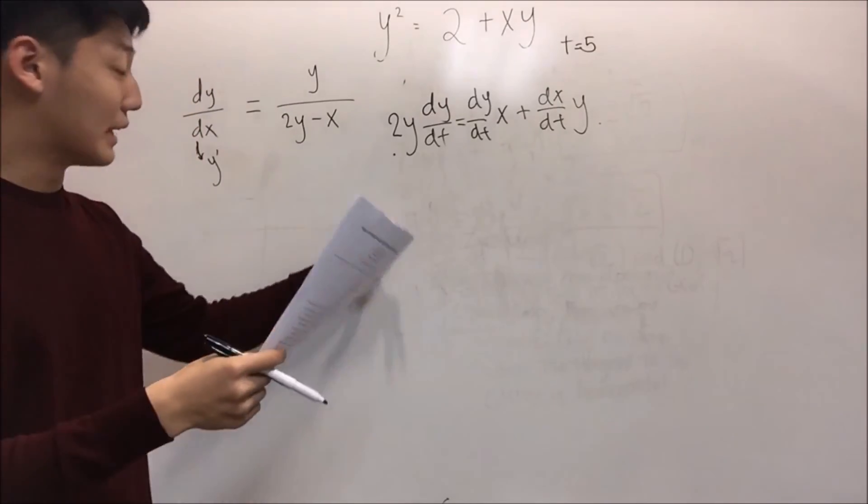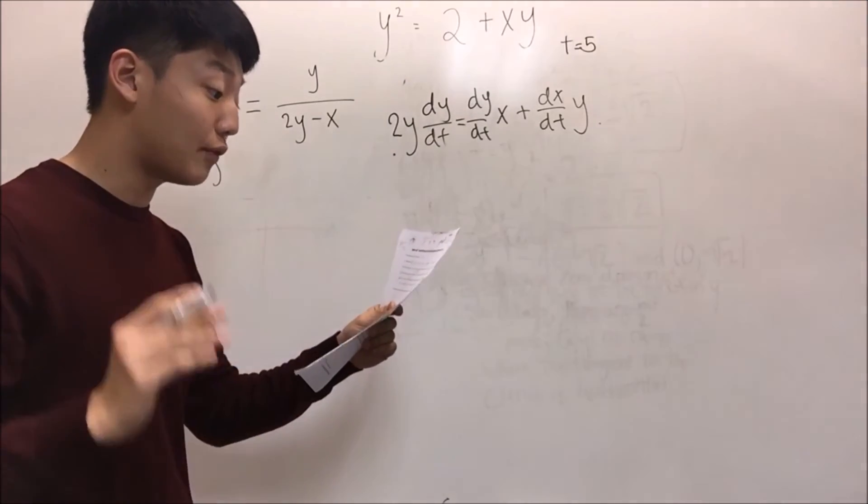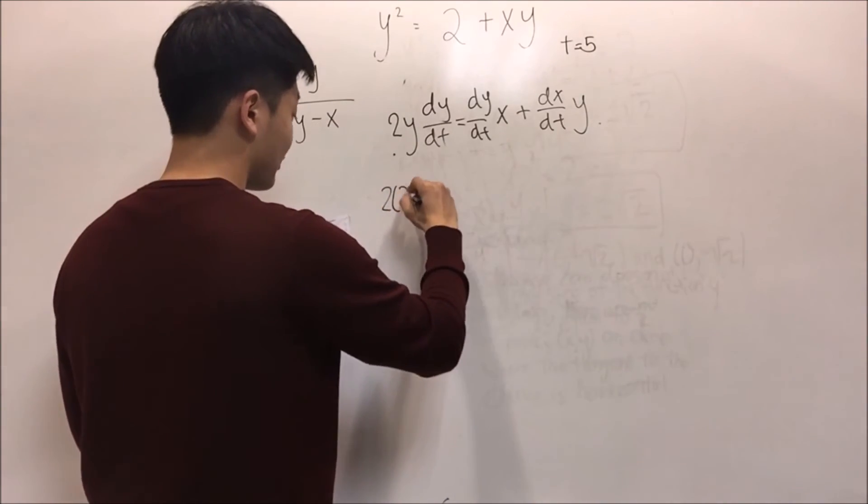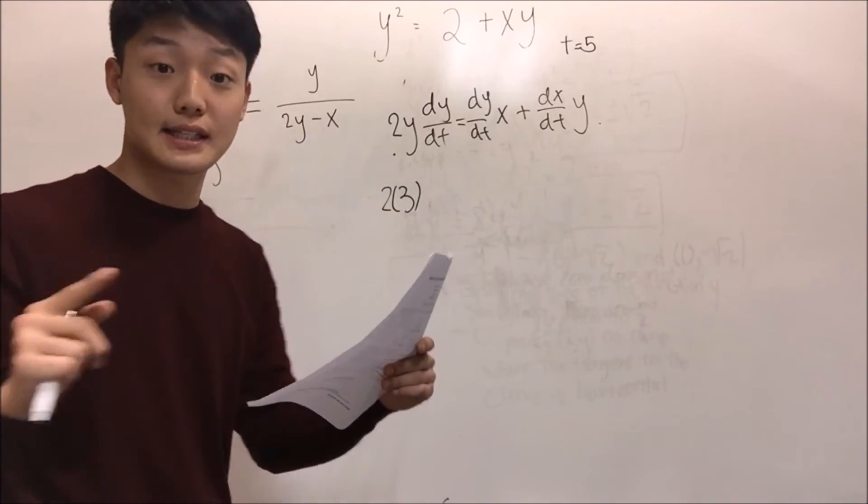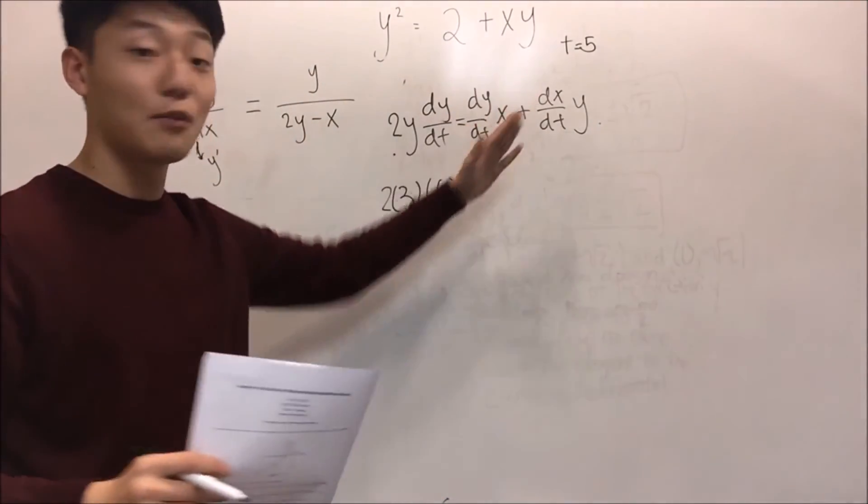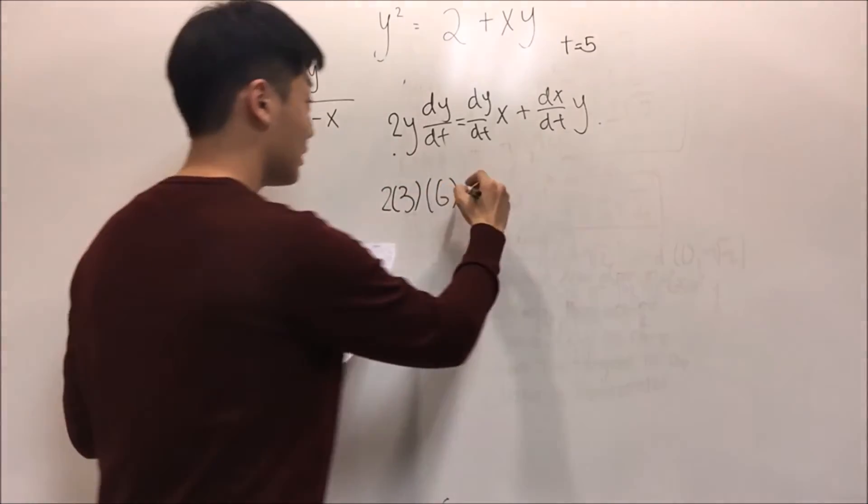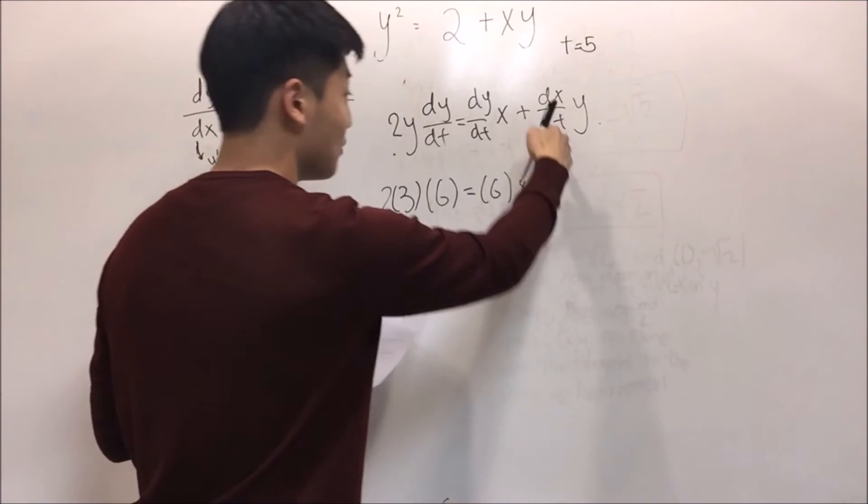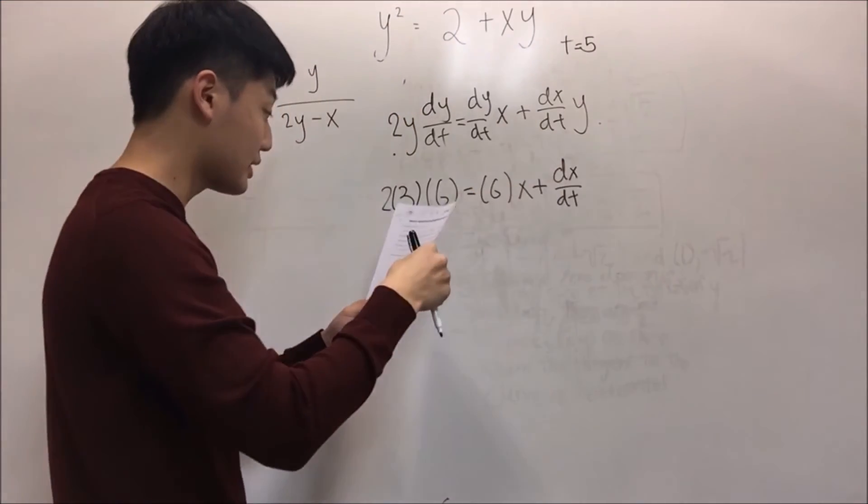Now we can just plug in the numbers. Because it says at time t equals 5 the value of y is 3, we can put 2 times 3, and dy/dt equals 6 when time is 5. So 6. Because we are only talking about t equals 5, we can plug in the information about t equals 5. dy/dt again 6 times x plus dx/dt and y which is 3.